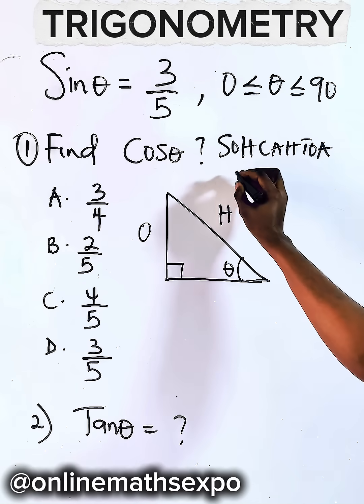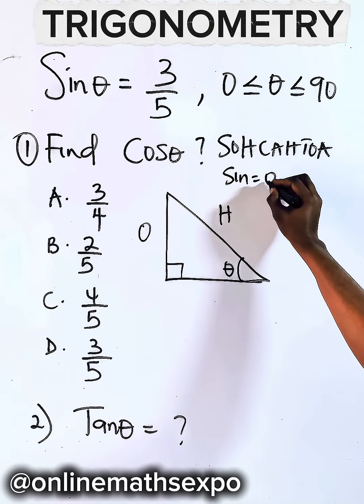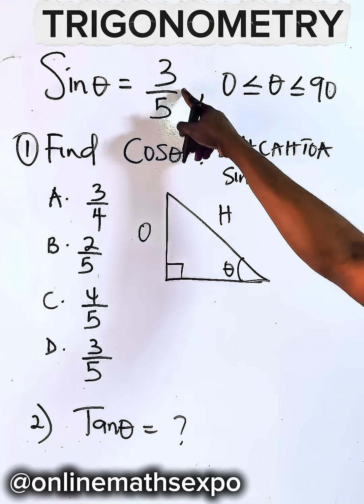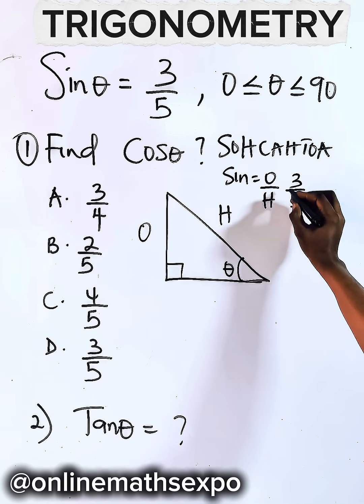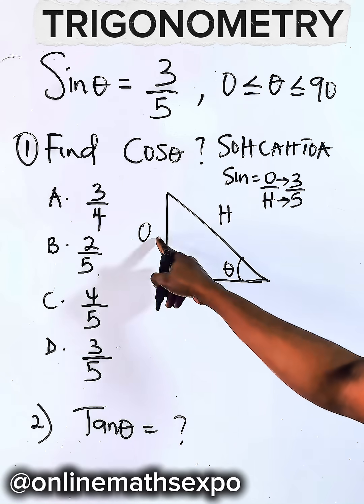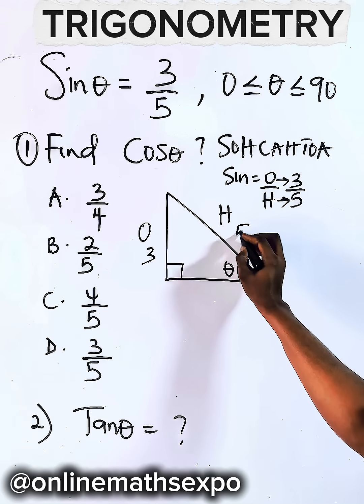Now, using your SOHCAHTOA, your sine is opposite over hypotenuse. So this will give us 3 over 5. So this is my opposite, this is my hypotenuse. So here we take 3, here we take 5.